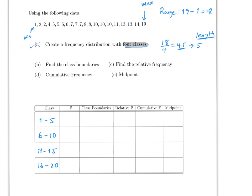That takes care of creating the four classes. Now for the frequency, you have to count how many numbers lie within each class. Between 1 and 5 there are six numbers. Between 6 and 10 there are ten. Between 11 and 15 there are four. And between 16 and 20 there is only one — the maximum. Stop the video to check these counts if necessary.